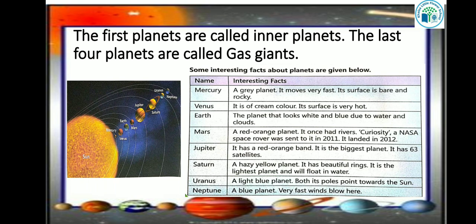Jupiter has a red-orange band, is the biggest planet, and has 63 satellites. Saturn is a hazy yellow planet with beautiful rings; it is the lightest planet and would float in water. Uranus is a light blue planet and both its poles point towards the sun. Neptune is a blue planet where very fast winds blow.